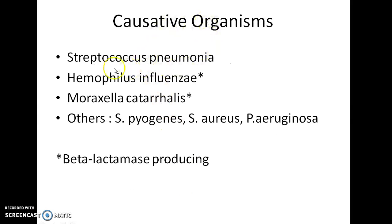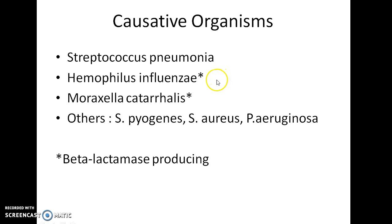What are the causative organisms? Streptococcus pneumoniae is the most common organism involved. Other organisms include Haemophilus influenzae and Moraxella catarrhalis — these three are the most common organisms implicated. It can also be caused by Streptococcus pyogenes, Staphylococcus aureus, and Pseudomonas aeruginosa. Among these, Haemophilus influenzae and Moraxella catarrhalis are frequently beta-lactamase producing strains.